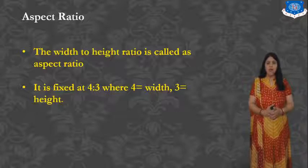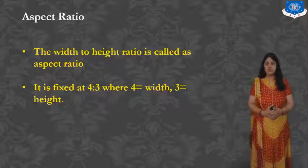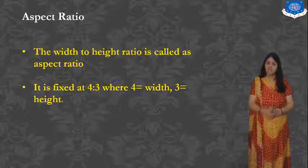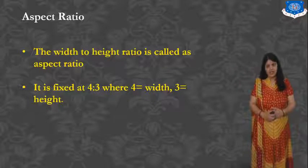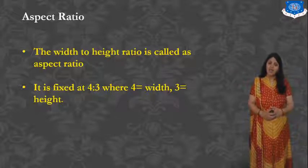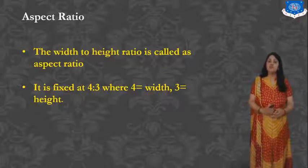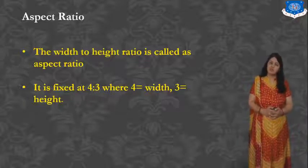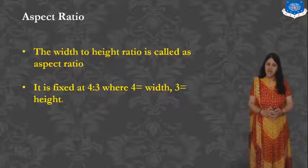We can see horizontally better compared to vertically. That is why the Aspect Ratio is fixed at 4:3, where 4 is equal to the Width and 3 is the Height.